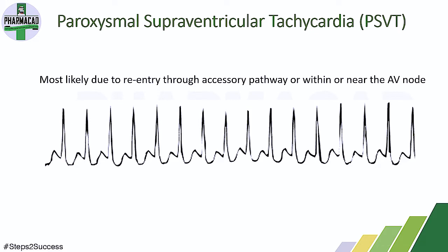The next type is paroxysmal supraventricular tachycardia, also known as PSVT. This happens because of re-entry mechanisms. PSVT can happen because of any type of re-entry. It is called supraventricular because the tachycardia originates just above the ventricles — just above the two lower chambers of the heart — typically involving an issue at the AV node, causing increased heart rate.